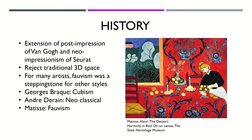It was originally supposed to be blue, but Matisse was disappointed with the color and how it made him feel, and started over. With Harmony in Red, he felt like it generated a feeling of warmth and comfort, but still reminds how intense it is in its composition.